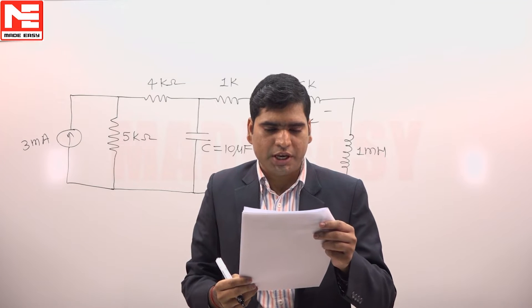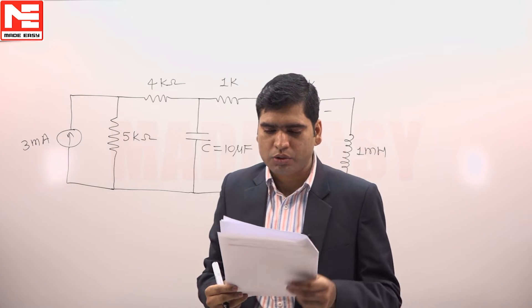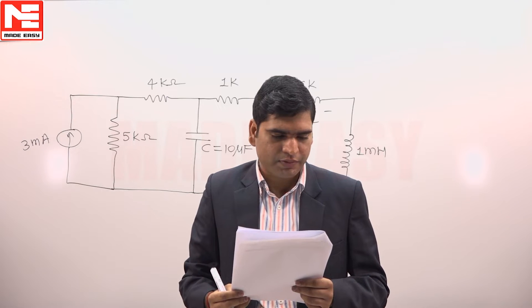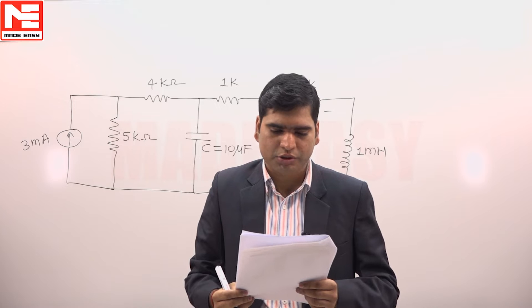In the circuit the switch k is open for t less than 0 and closed at t is equal to 0. The voltage vx across 5 kilo ohm resistor at t is equal to 0 plus.